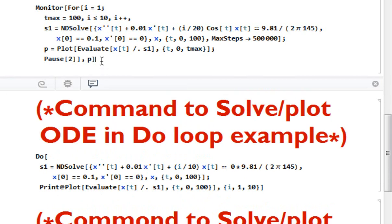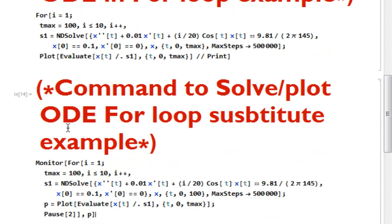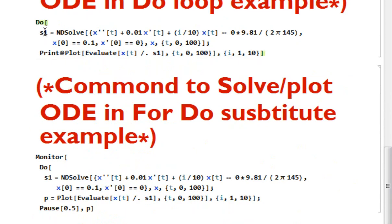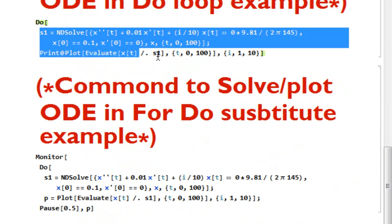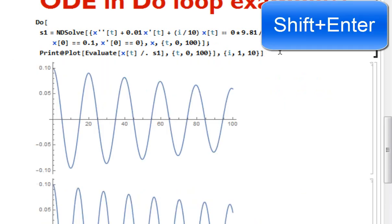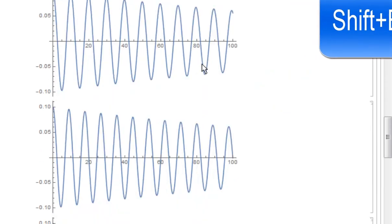The same thing can be done with a do loop instead of a for loop. This is the syntax to solve the differential equation, this is the syntax to plot the ODE output, and this is how you use it inside the do loop. Varying i from 1 to 10 is simpler than the for loop syntax — very understandable and easy to implement. Simply press Shift and Enter and you can see the different outputs.